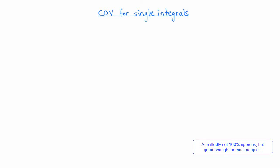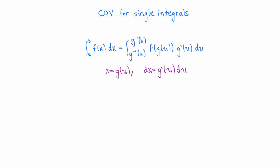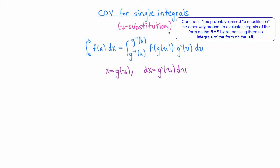Let's start by carefully examining what we know about change of variables for single integrals. When we're evaluating an integral of the form — the integral from a to b of f of x dx — it's sometimes useful to make a substitution of the form x equals g of u. When we do that, the differential dx has to be replaced by g prime of u du, and the original integral becomes the integral from g inverse of a to g inverse of b of f of g of u times g prime of u du. This method is also sometimes called u-substitution, and it's really an integral form of the chain rule for differentiation.